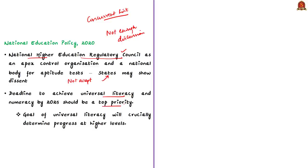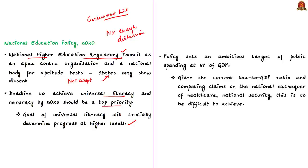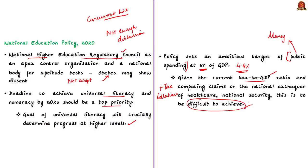Universal literacy and numeracy crucially determine progress at higher levels. The policy prescribes a target to attain universal foundational literacy and numeracy in all primary schools by Grade 3, to be achieved by 2025. The policy sets a target of public spending by both center and states together at 6% of GDP; the current figure stands at around 4.4%. Given present tax collection levels and competing claims from healthcare and national security, achieving 6% of GDP for education may be challenging. An editorial notes that resources are never the main roadblock when there is public and political will.